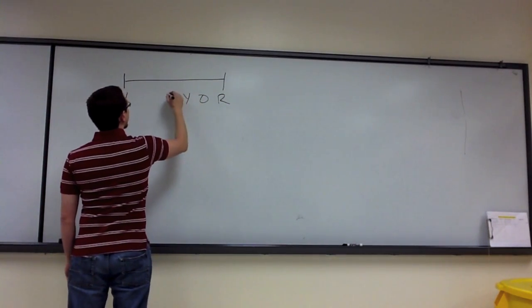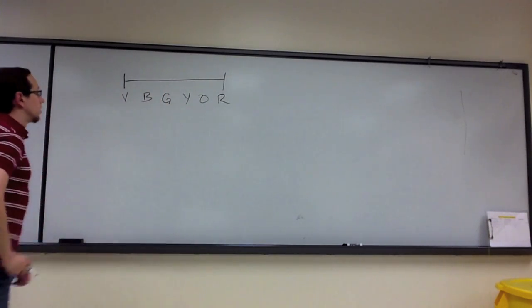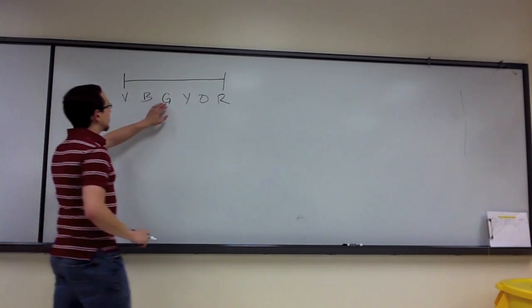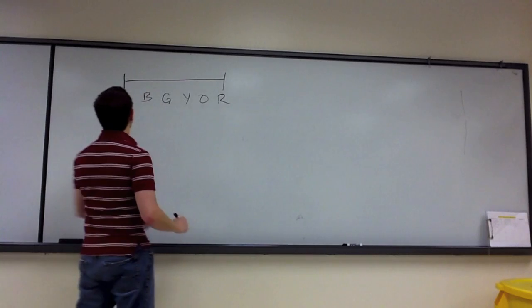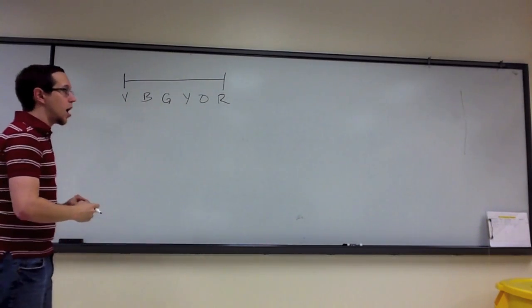This is one that you've probably learned several times before: Roy G. Biv - violet, blue, green, yellow, orange, and red. So these are the colors of light that we can actually perceive with the naked eye.